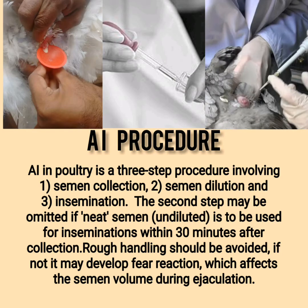AI in poultry is a 3-step procedure involving: 1) semen collection, 2) semen dilution, and 3) insemination. The second step may be omitted if neat semen (undiluted) is to be used for insemination within 30 minutes after collection. Rough handling should be avoided, as it may develop a fear reaction which affects the semen volume during ejaculation.